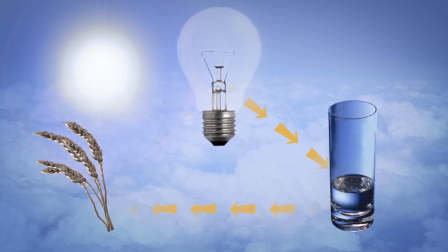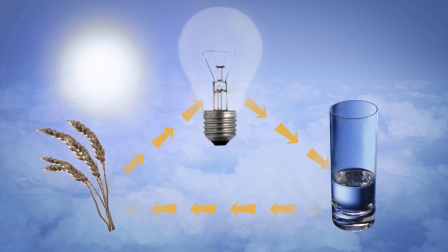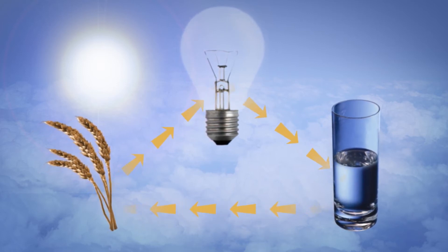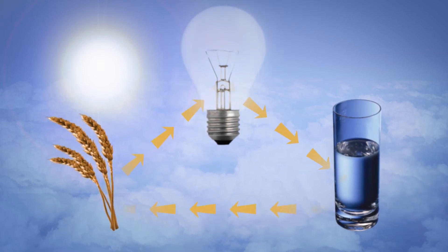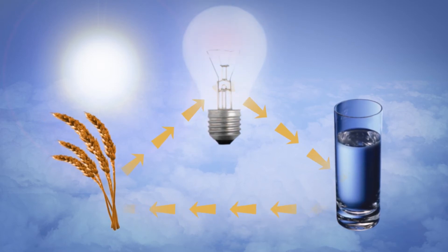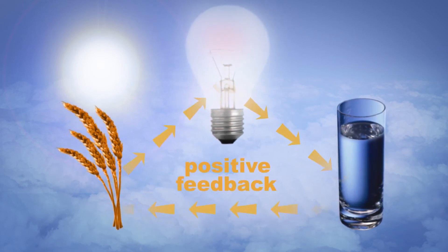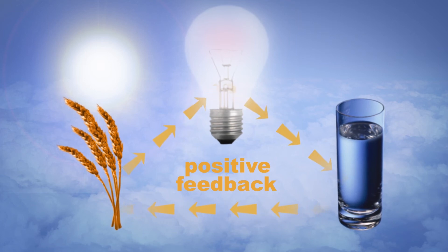Irrigation enhances biofuel production, which is used to increase output of energy and water. This further increases crop yields, energy, food, and water in the next season, creating a positive feedback loop of improved efficiency and output.